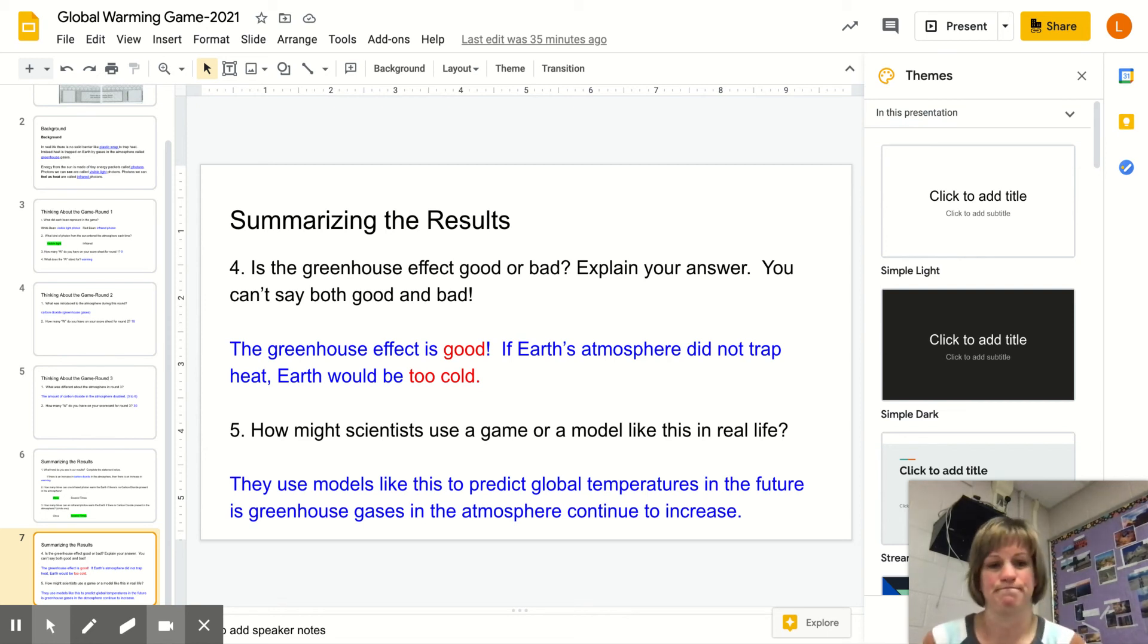So then what is winning? I think of it like Goldilocks. Goldilocks didn't want her porridge too hot or too cold. The round that's really best for our planet is round two, where we have the right amount—a moderate amount—of greenhouse gases like carbon dioxide, but not out of control. That would be round three.